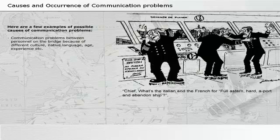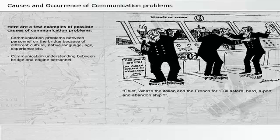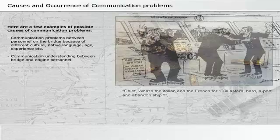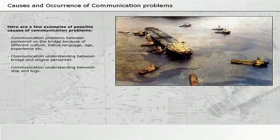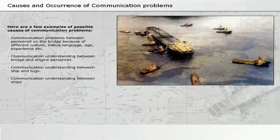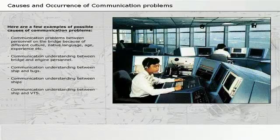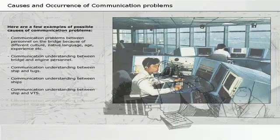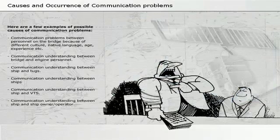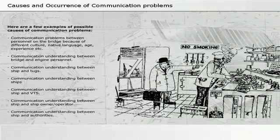Here are a few examples of possible causes of communication problems: between personnel on the bridge because of different culture, native language, age, or experience; between bridge and engine personnel; between ship and tugs; between ships; between ship and ship owner or operator; and between ship and authorities.